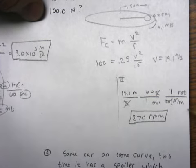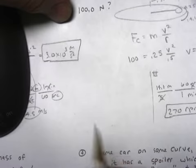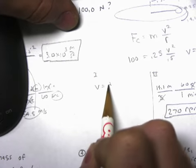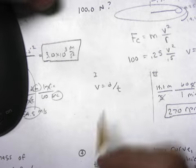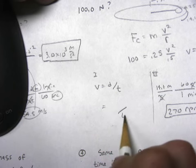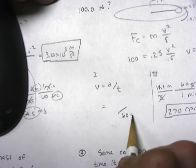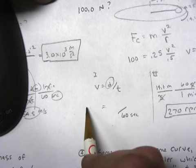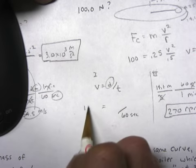Using the dimensional analysis. The other way you could do it is you could say velocity equals distance over time. So I want the time to be 60 seconds, and I know the velocity here is 14.1.